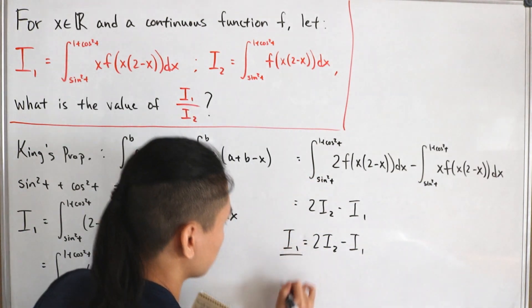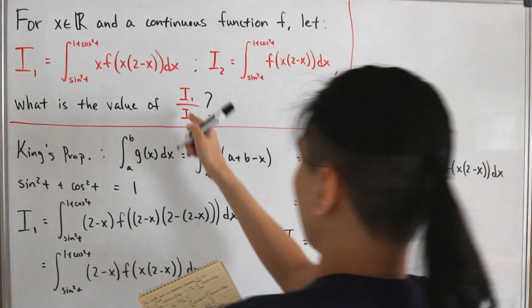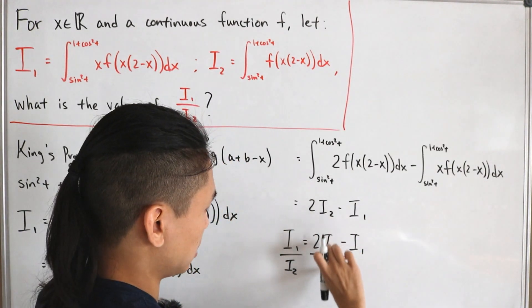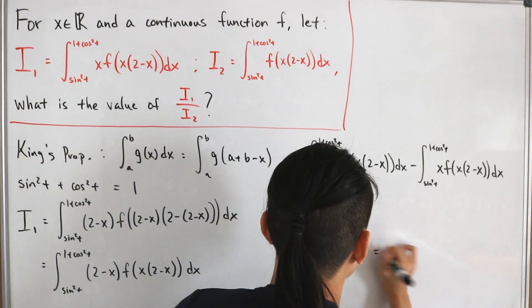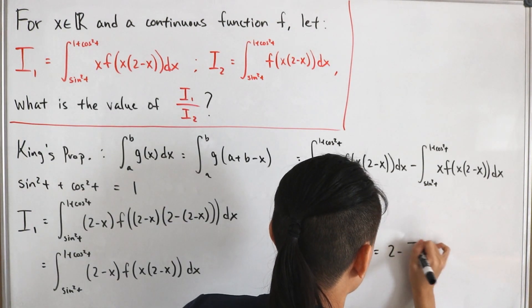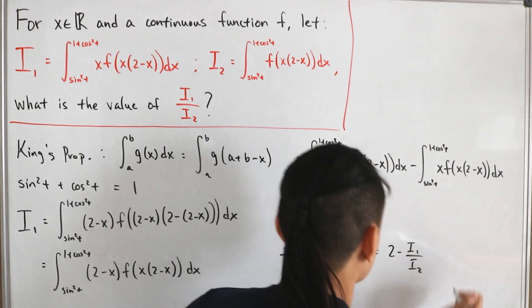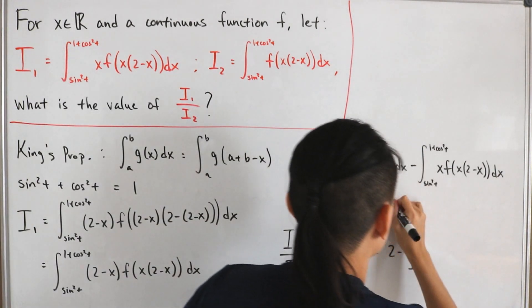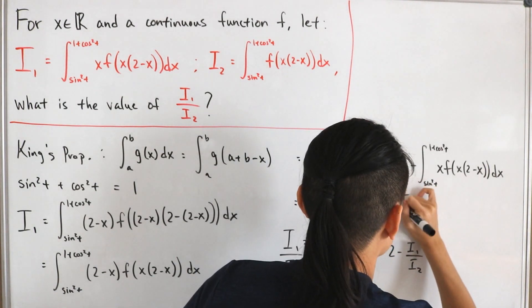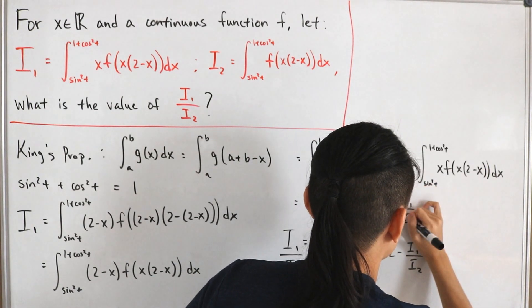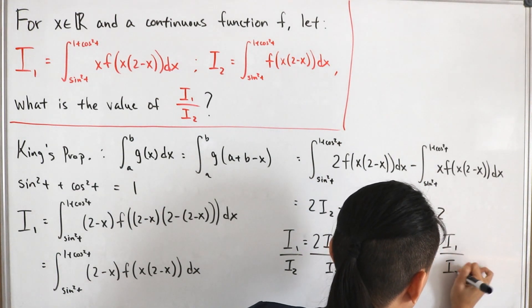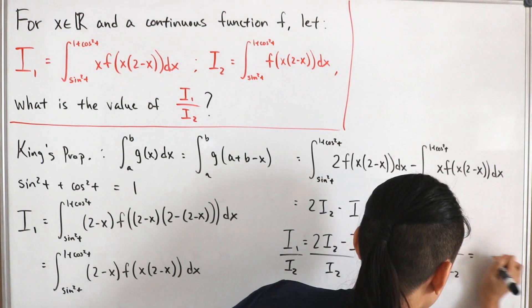If I just divide by i sub two to both sides to give what we have, this will yield us just two, then minus i sub one divided by i sub two. I'll add the i sub one divided by i sub two to both sides, so that means this is going to be two times i sub one divided by i sub two equals two, and so therefore this just completes our puzzle: i sub one divided by i sub two is indeed just equal to one.